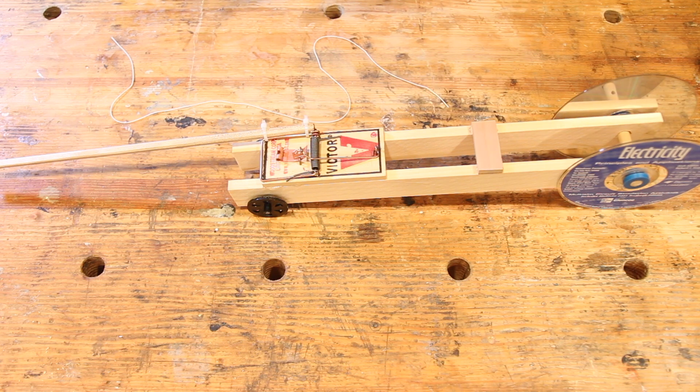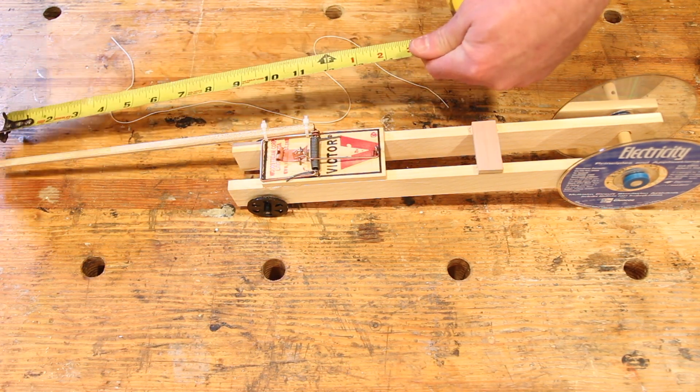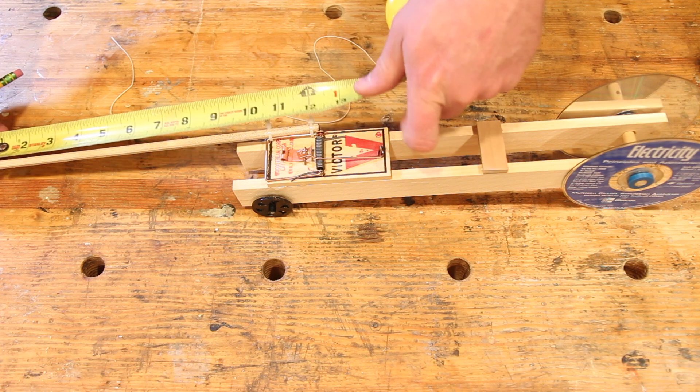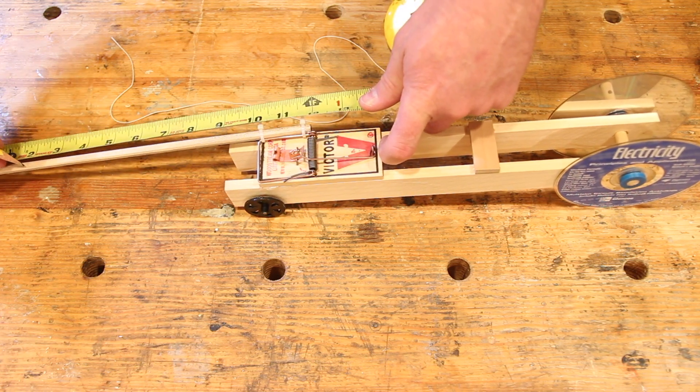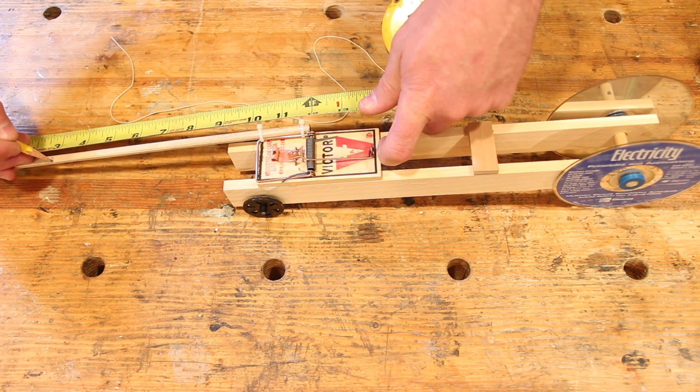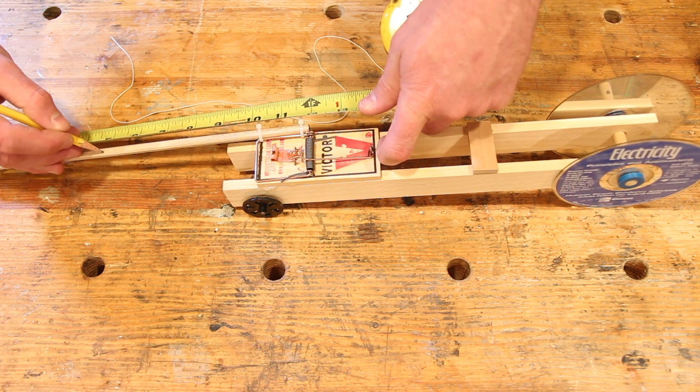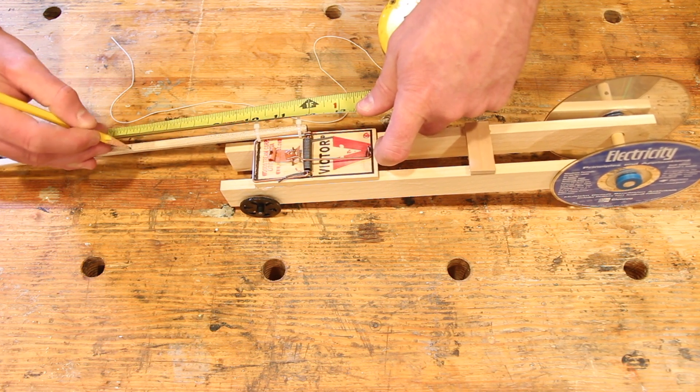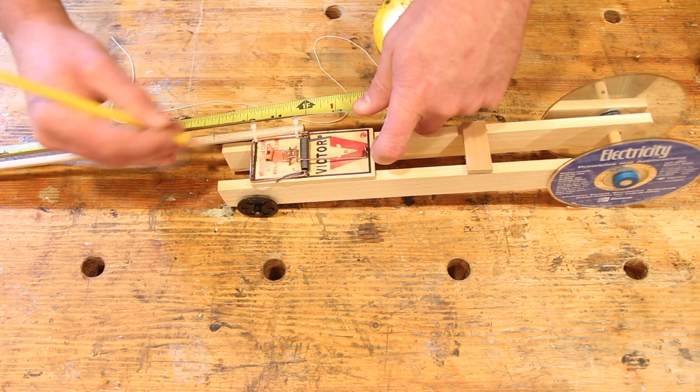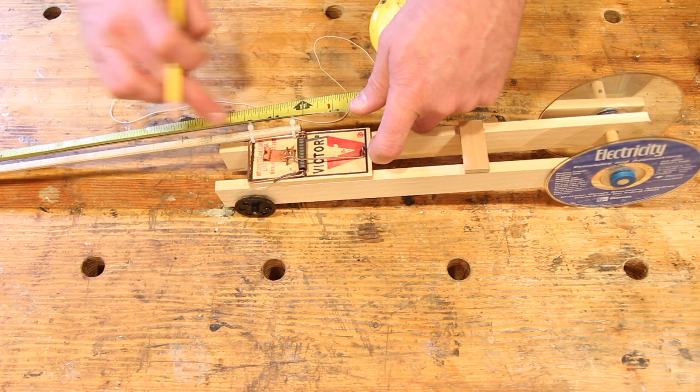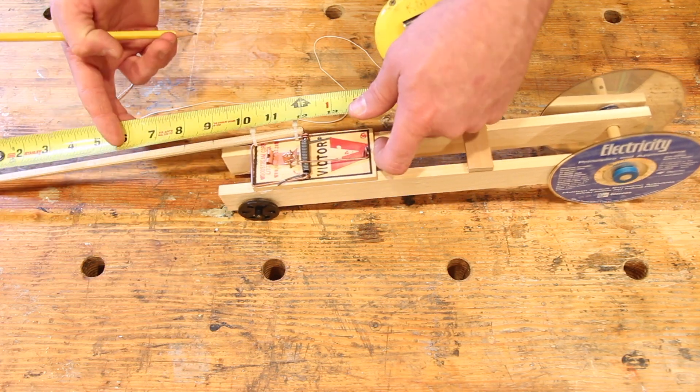So before we put this string on, we're going to make some marks along this arm every inch that we'll use later on when we're testing it. Use a pencil or a marker and a tape measure or a ruler to mark these every inch. You don't have to go all the way down to here, so you can stop in this case at the nine.